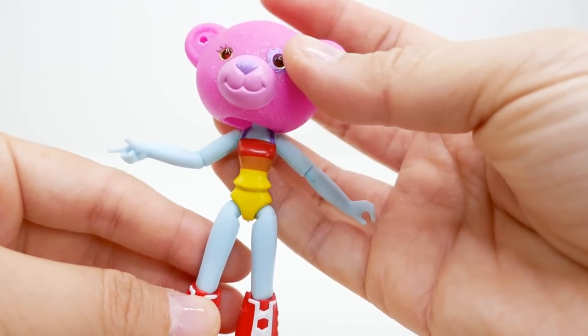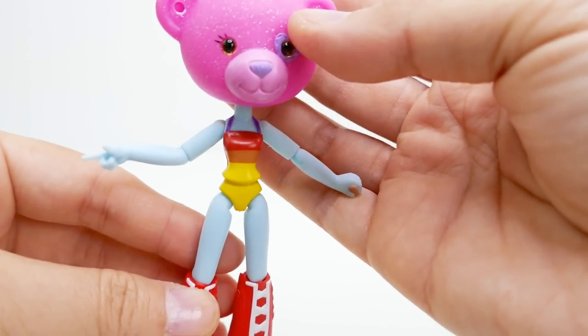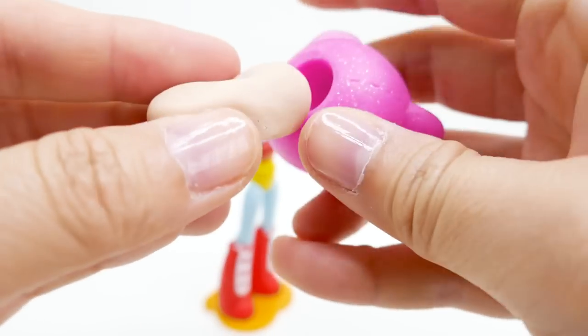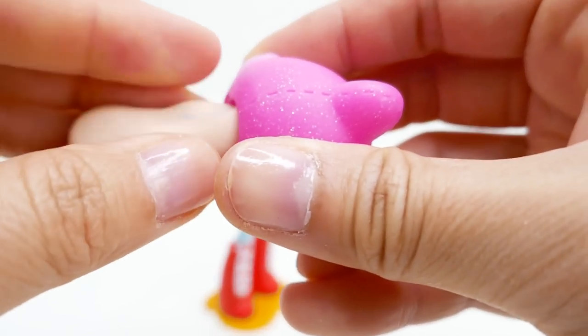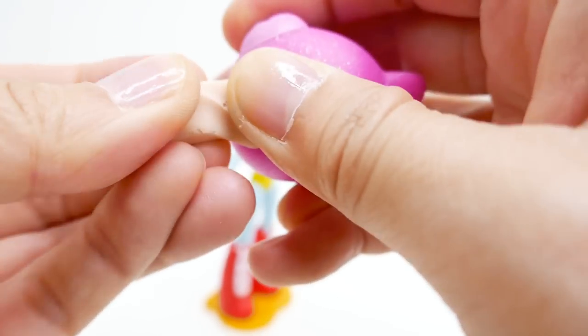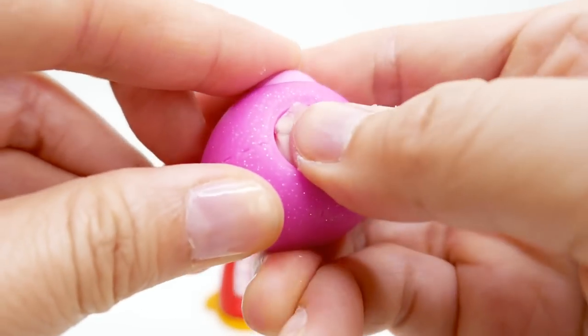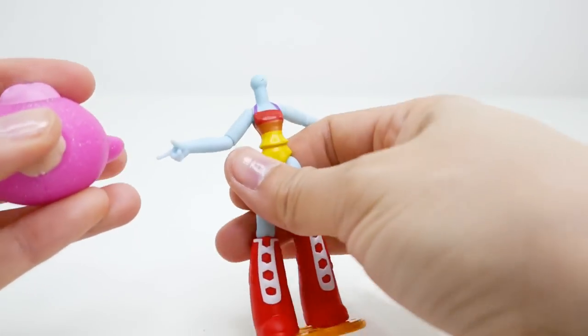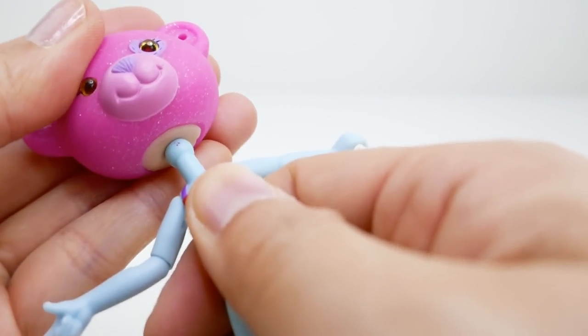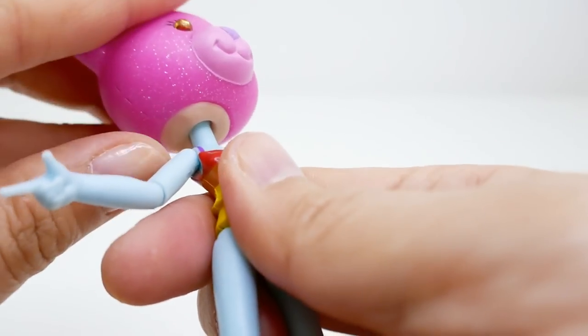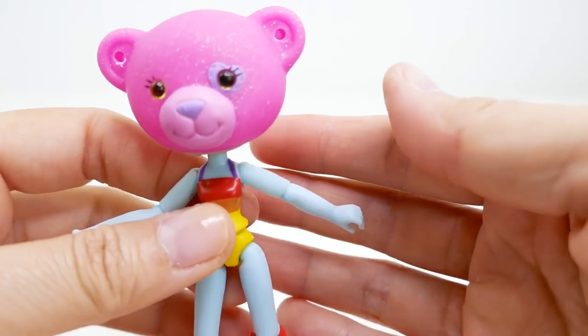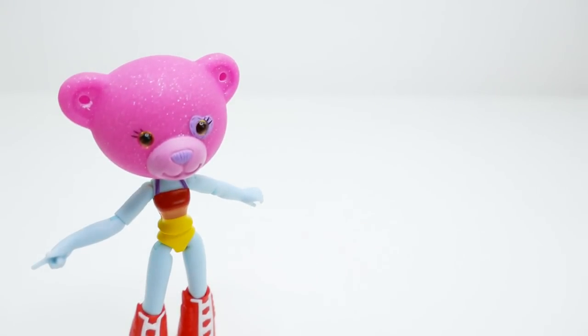There we go. It's a little bit loose because this hole here is very big, so we're going to use a little bit of air dry clay to fill in the gap and then put the head on. Here's a bit of clay and we're going to put it into the hole, pack it in, and then we're going to stick it right in there.